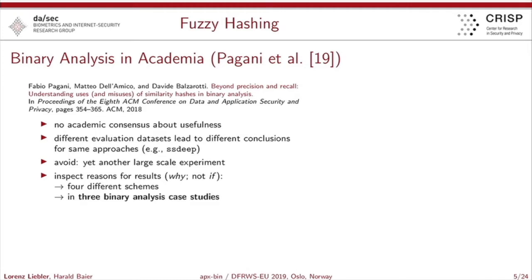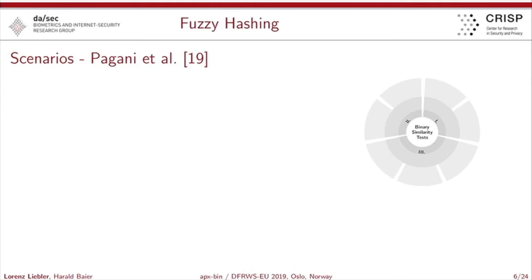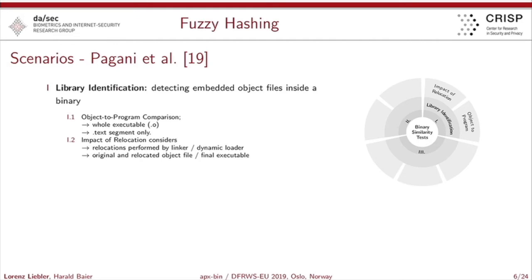Therefore, Fabio introduced three different scenarios for four schemes — and those scenarios are actually the foundation for my research as well. The first scenario is the task of library identification: you try to detect embedded object files inside of a binary, with two subtasks — object-to-program comparison and the impact of relocation.